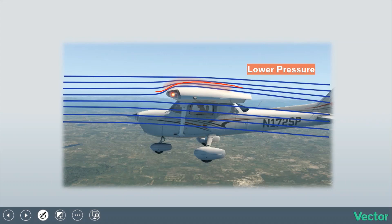Because it speeds up, its pressure decreases. So we create an area of lower relative pressure above the wing. So we have higher pressure below that pushes up towards that lower relative pressure.